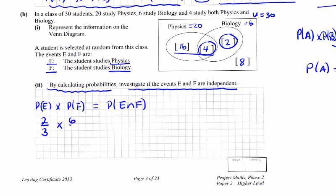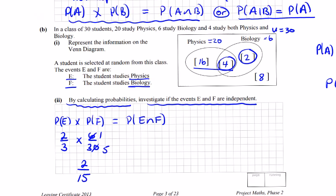I'll leave it at that - you could write 1 over 5. 2 times 1 on top is 2, and 3 times 5 on the bottom is 15. Now is that equal to 4 over 30? And you can see that it is: 2 over 15 equals 2 over 15. Therefore independent.